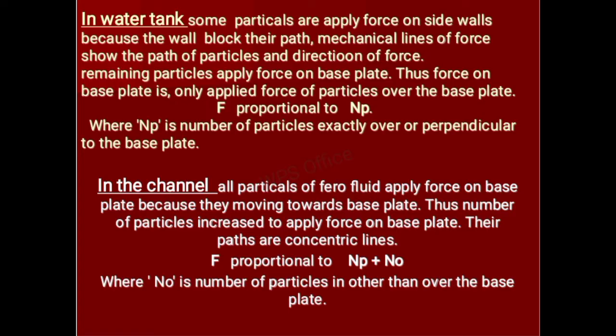Force on the base plate is only applied by particles directly over the base plate. F is proportional to NP, where NP is the number of particles exactly over or perpendicular to the base plate. In the channel, all particles of ferrofluid apply force on the base plate because they are moving towards it. Thus the number of particles applying force on the base plate increases. Their paths are concentric lines. F is proportional to NP plus No, where No is the number of particles in positions other than directly over the base plate.